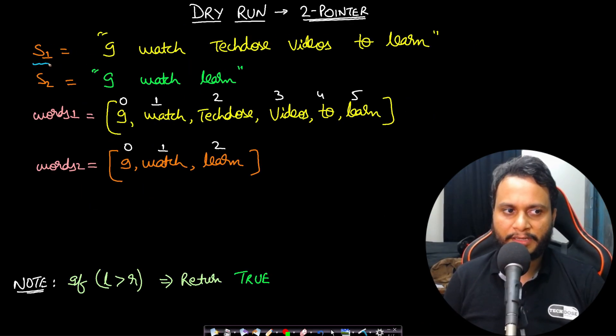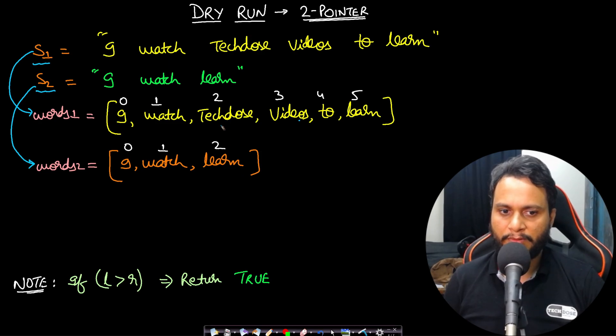We can easily do this by the two-pointer approach. We can take string S1, let's say it is 'I watch TakeDose videos to learn'. String S2 is 'I watch learn'. Now you can break down string S1 in the form of words: I, watch, TakeDose, videos, to, learn. So we have six words. You can convert S2 into a word list as well: I, watch, learn. Once you have done that, then you can apply the two-pointer approach on top of it.